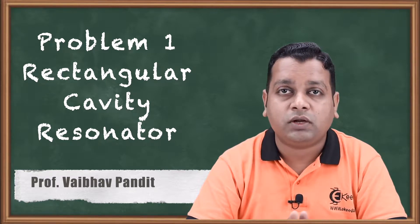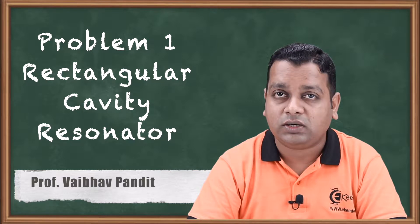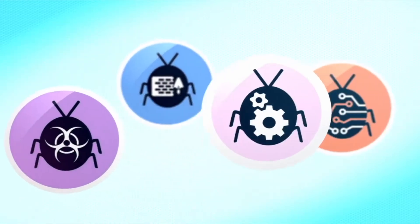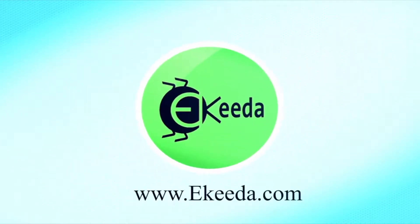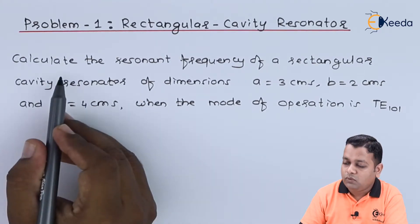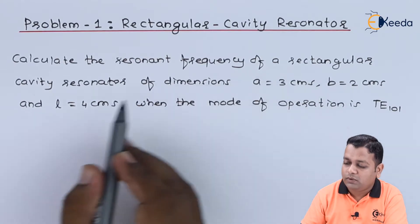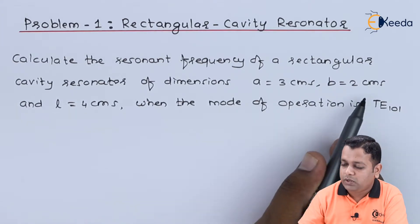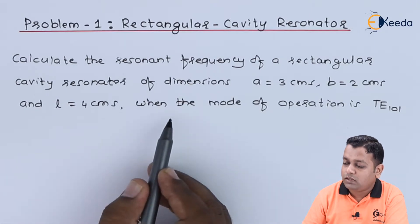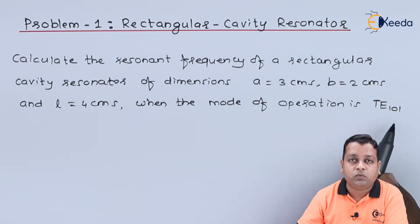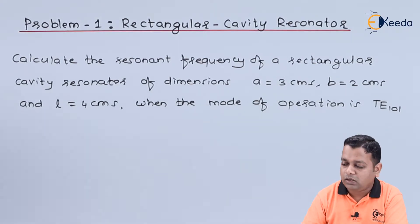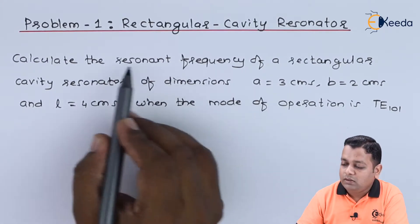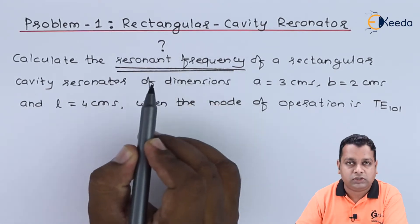As in the previous video we have an understanding of resonant frequency for rectangular cavity resonators. Now let us work on a problem. Calculate the resonant frequency of a rectangular cavity resonator with dimensions: small a = 3 cm, small b = 2 cm, and l = 4 cm, for the mode of operation TE 101.